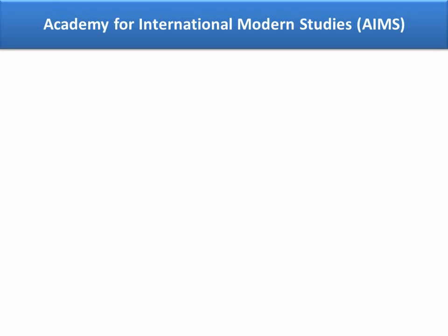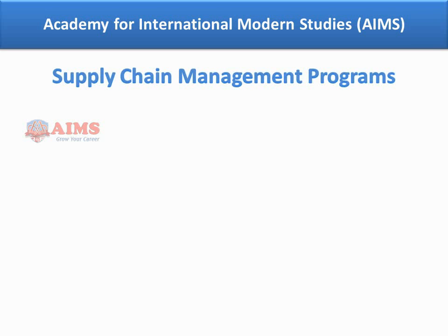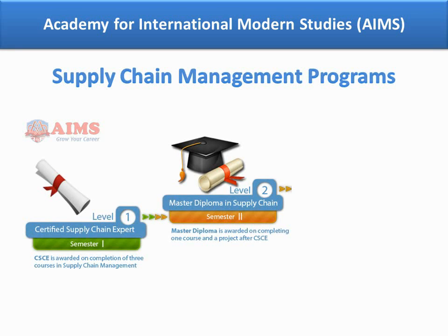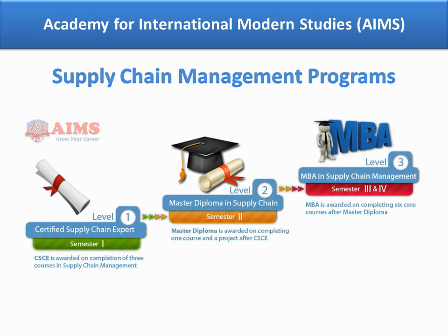Academy for International Modern Studies is a UK-based, globally recognized institution in supply chain management studies. AIMS offers the following programs through interactive learning: Certified Supply Chain Expert, Master Diploma in Supply Chain, and MBA in Supply Chain Management. For details, please visit ems.education.